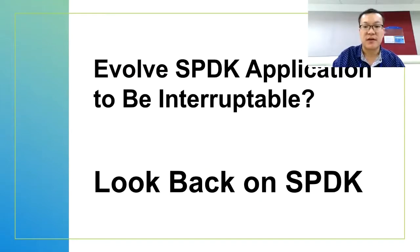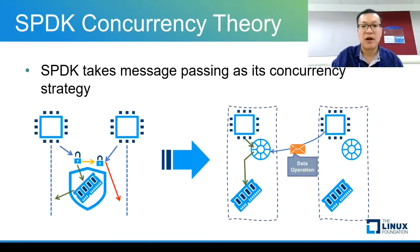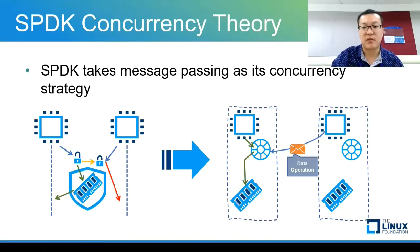Towards secure containers, can we evolve SBDK applications to be interruptible? Let's first look back at SBDK internals. One of the primary aims of SBDK is to scale linearly with the addition of hardware. To achieve this, SBDK execution units must be independent from one another as much as possible and avoid soft locks. Instead of placing shared data in a global location that all threads access after acquiring a lock, SBDK takes a different approach: it will often assign that data to a single thread. When other threads want to access the data, they must pass a message to the owning thread to perform the operation on behalf of those threads.